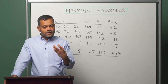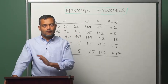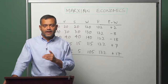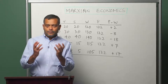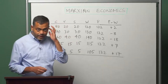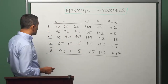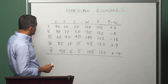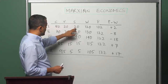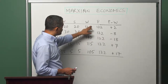To understand the details of how rent emerges, let us go back to the example we used earlier — the example with five sectors. Sector 1: constant capital is 80, variable capital 20, surplus value 20, so the value of output is 120. Sector 2 has 70 and 30 as constant and variable capital, surplus value is 30, so the value is 130.